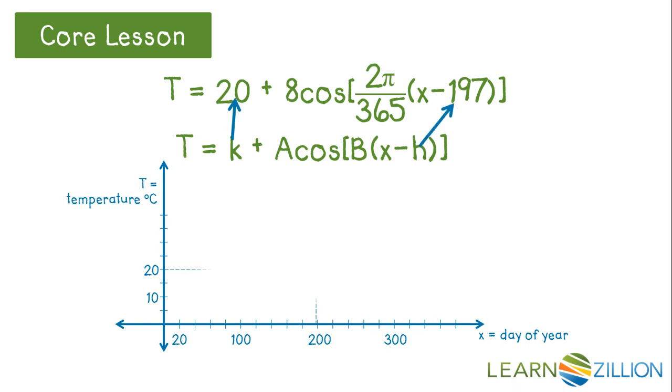H is 197, and K is 20, so the 5-point cosine pattern will start at 197, 20, with the high temperature 8 above the midline of 20, or 28 degrees Celsius. The low temperature, 8 below the midline of 20, or 12 degrees Celsius, will occur half a year before and after the high point.